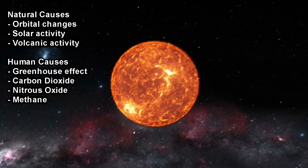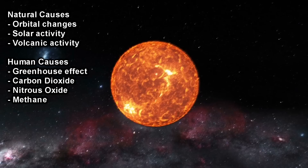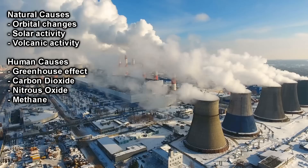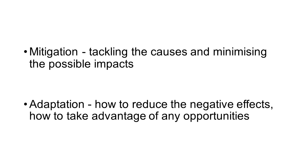Lastly, we looked at climate change — taking the evidence into account, knowing where that evidence comes from, how climate change affects us, and then looking at the causes and how we can mitigate and adapt to it. Knowing what mitigation and adaptation mean are two definitions you need to fully understand.